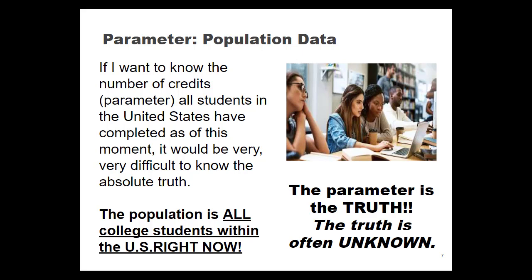Why? Because the population is all college students within the United States right now. I would have to be able to reach all those universities and account for all those students. It would be a very expensive study, and ultimately I don't know if I have captured every single piece of data. If I've missed any of that data then I don't know the truth because I'm missing some pieces. The parameter is the truth — it's the absolute truth with no error involved — and so most often the truth is unknown. We can have some idea of the truth but we won't really have absolute certainty.